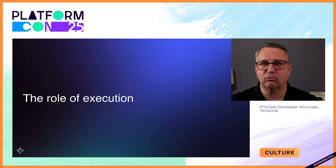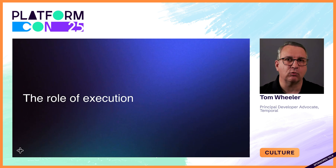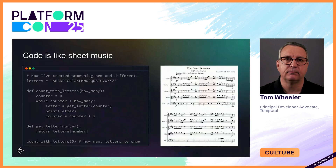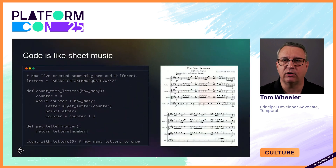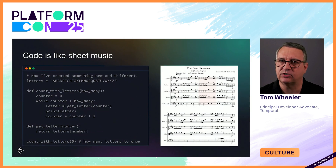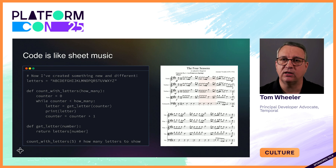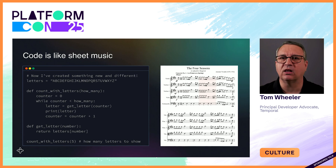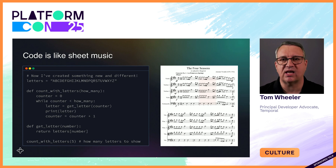I think the best way to explain durable execution is to examine the relationship between the code you write and what happens at runtime. I'll do that with a basic program in Python — it counts from one to five but does so using letters instead of numbers. Don't worry if you're not a Python developer; in a moment I'll explain this code line by line and later show what happens when it crashes.